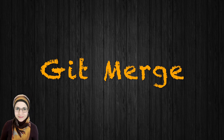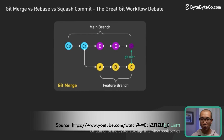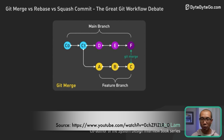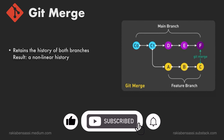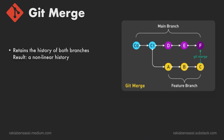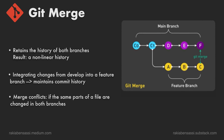Git merge combines changes from one branch into another, creating a new merge commit if there are new commits in both branches. Commit history: Git merge retains the history of both branches, resulting in a non-linear history. Usage in teams: it's commonly used when integrating changes from a shared branch like develop into a feature branch, maintaining commit history for traceability. Conflicts occur if the same parts of the same files are changed in both branches, and need to be resolved before completing the merge.